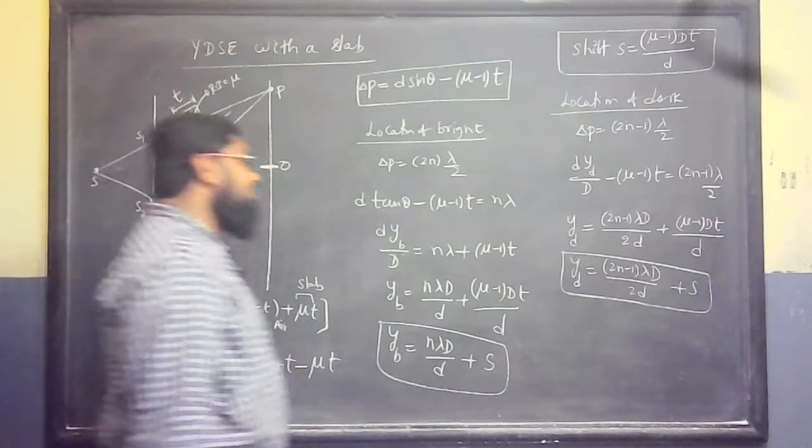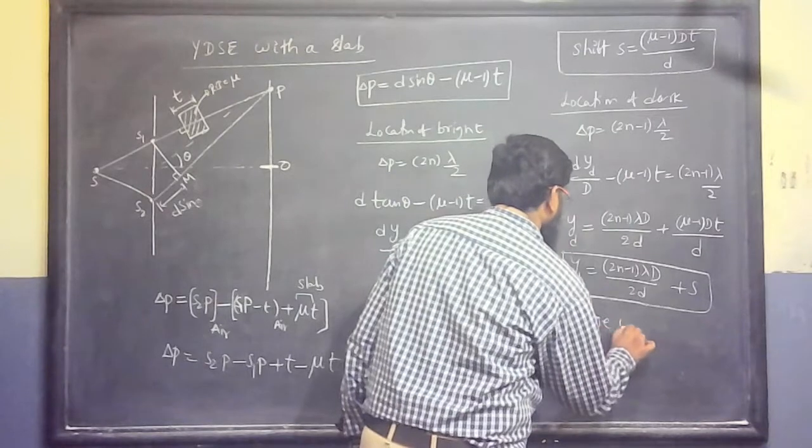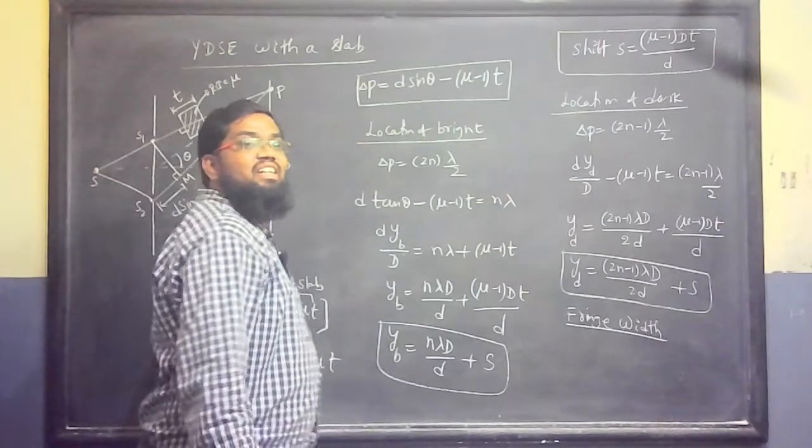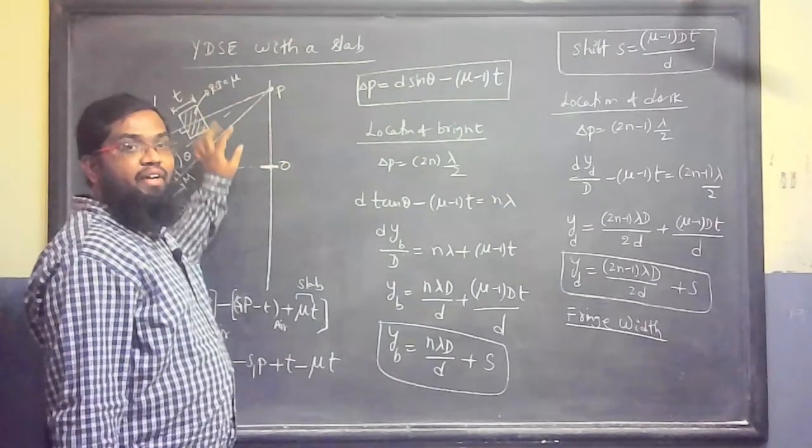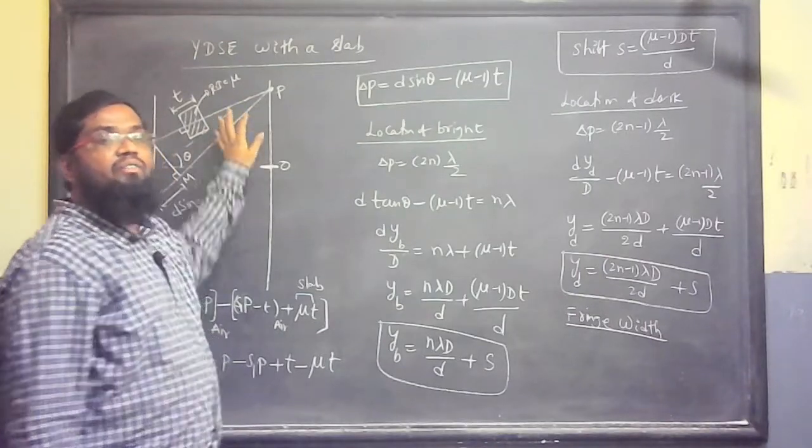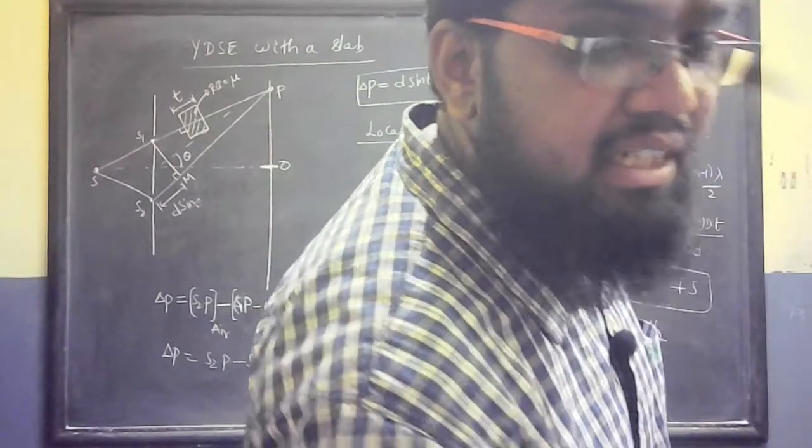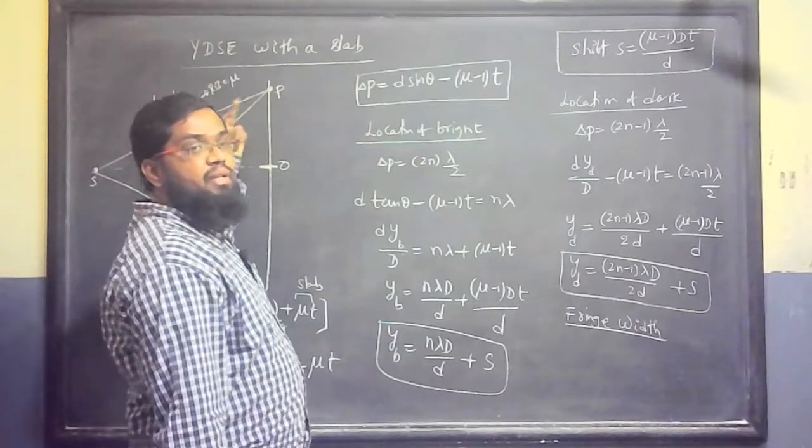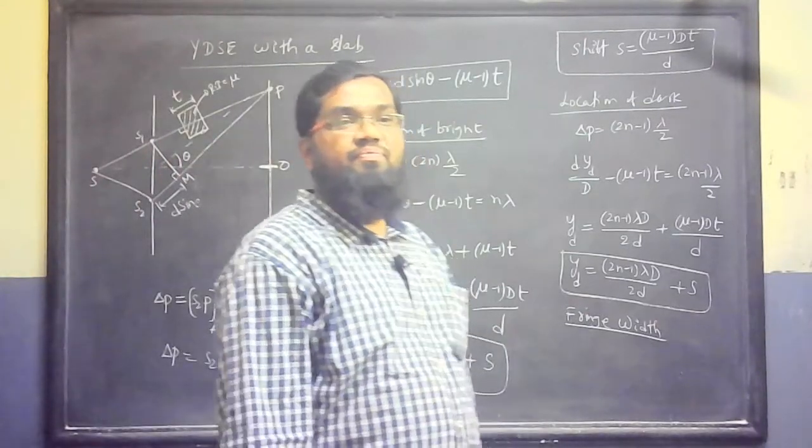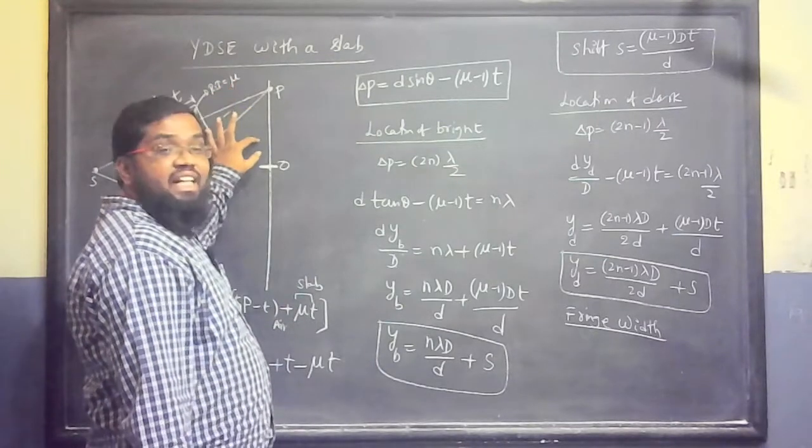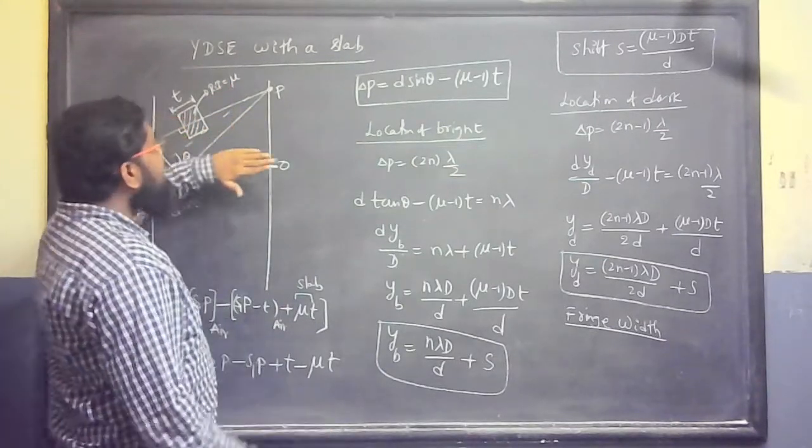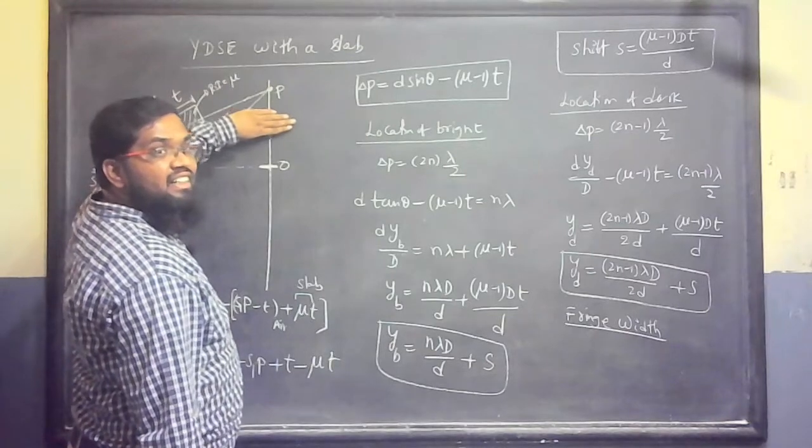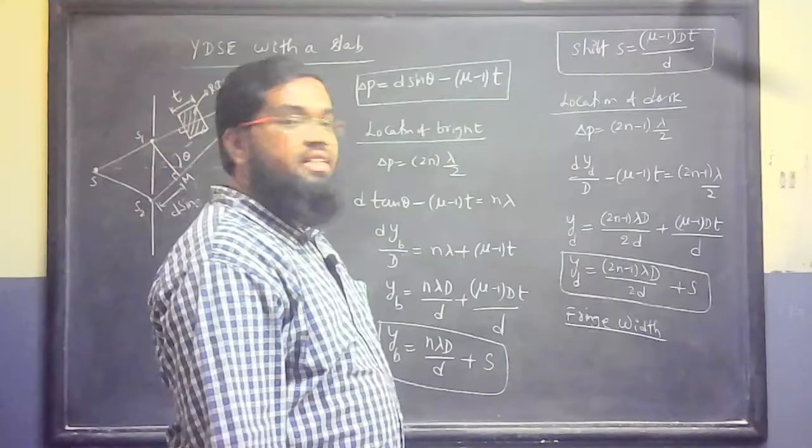Then what about fringe width? Y2 minus Y1, Y3 minus Y2, Y4 minus Y3, Y5 minus Y4, that is the same. What about fringe width? Y4 minus Y3, Y5 minus Y4, it will be the same. S and S cancel here. What is it? Beta is available. Fringe width will remain. First bright, lambda D by D, second bright, 2 lambda D by D, subtract.